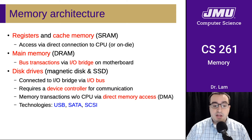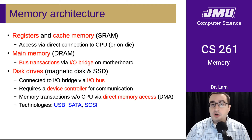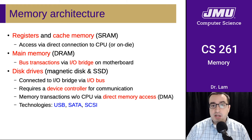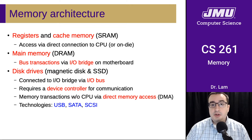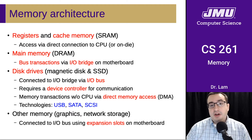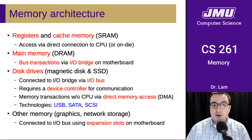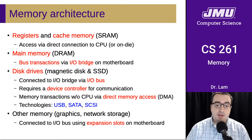We'll see how the CPU can start a transaction between main memory and a disk drive, and then the disk drive and the memory can communicate directly via something called direct memory access. There are also other memories, such as graphics cards or network storage, and these are all connected to the IO bus using expansion slots.